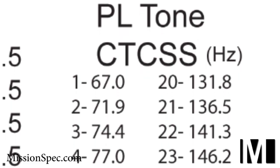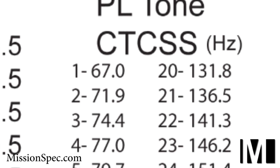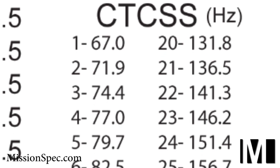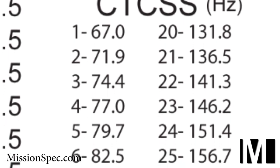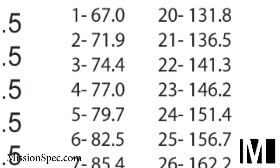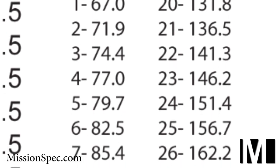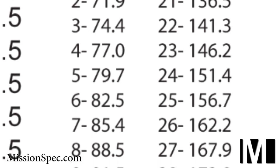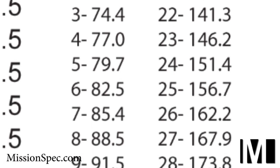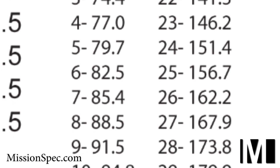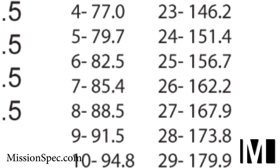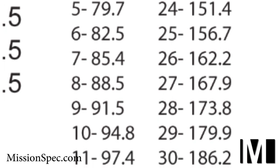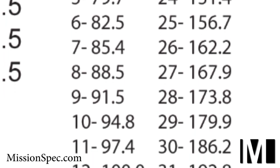PL tones, CTCSS, private channels, and subchannels are all describing the same thing. We will be using the term PL tone for the duration of this video. A PL tone allows two or more people to communicate in what feels like a private conversation by setting both radios to a proper tone. The tone is transmitted along with your voice to the receiving radio. If the receiving radio is set to the same PL tone, the operator will be able to hear your transmission. If the receiving radio is not set up correctly, they will not hear you.